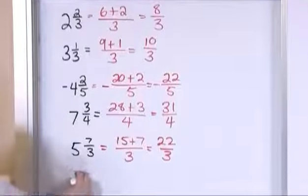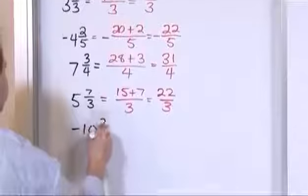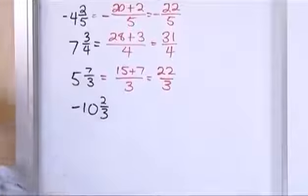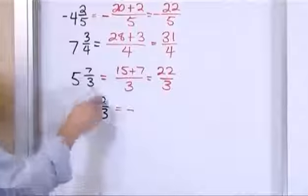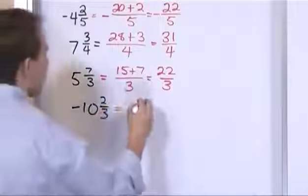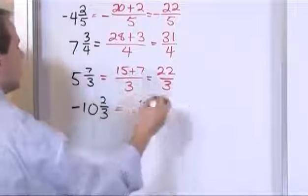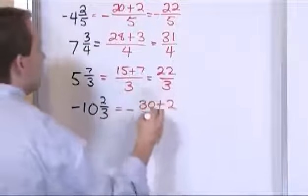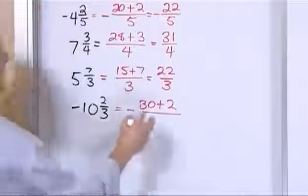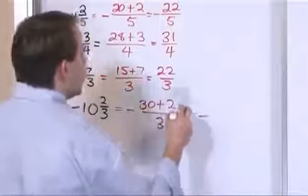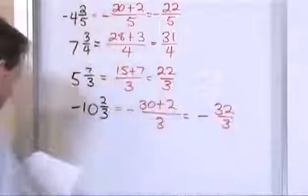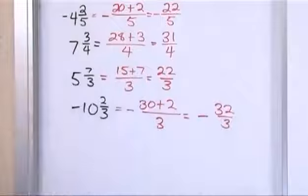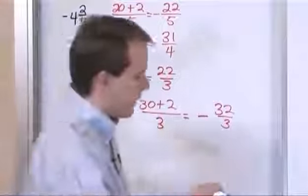What if you have negative ten and two thirds? You have a negative sign, so leave it out front and work with the numbers. Ten times three is thirty, plus the two, divided by three. So you'll have negative thirty-two over three, and that is the fraction completely equivalent to negative ten and two thirds.